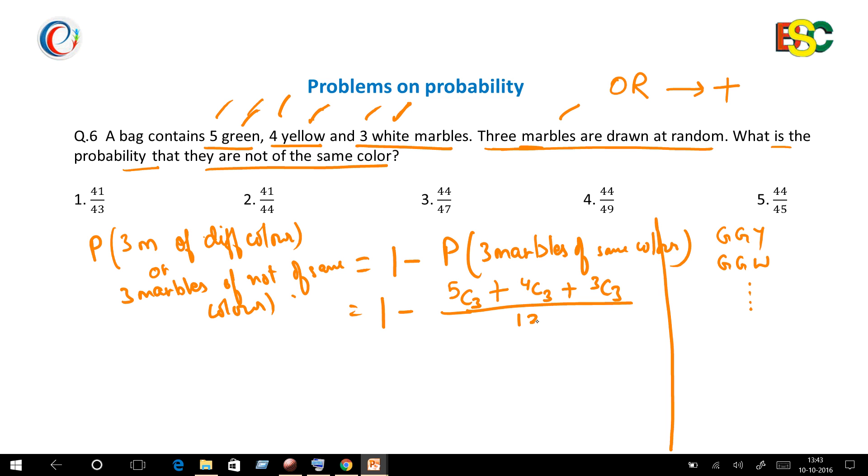Further solving, 5C3 is 5 factorial over 3 factorial times 2 factorial. You can write 5 factorial as 5 times 4 times 3 factorial. Cancelling the 3 factorial and dividing 2 into 4, you will get 10. Similarly, on further solving these two expressions you will get 4 and 1 respectively.